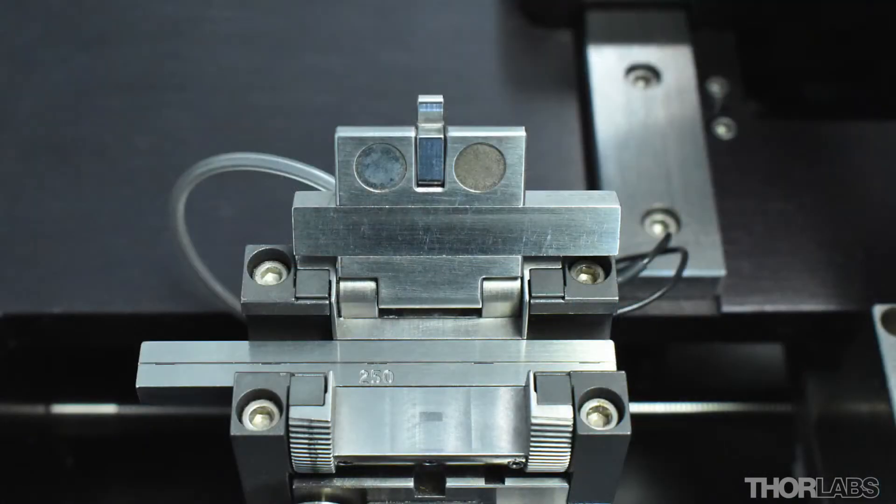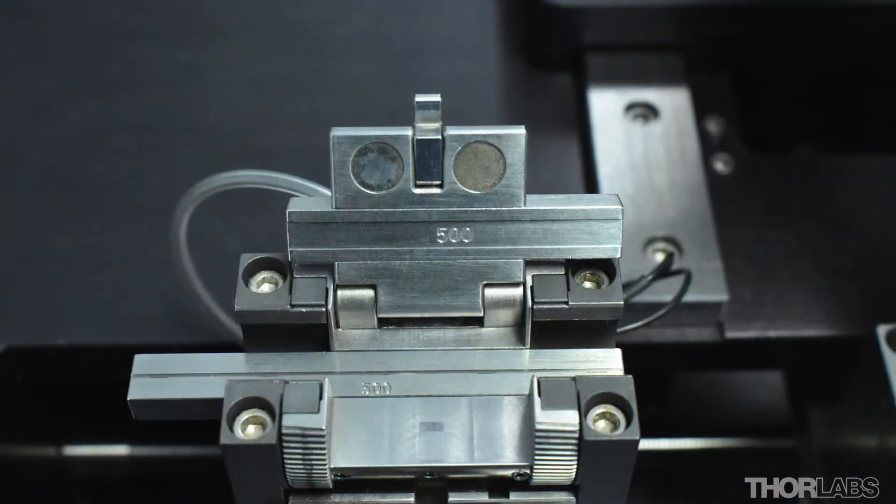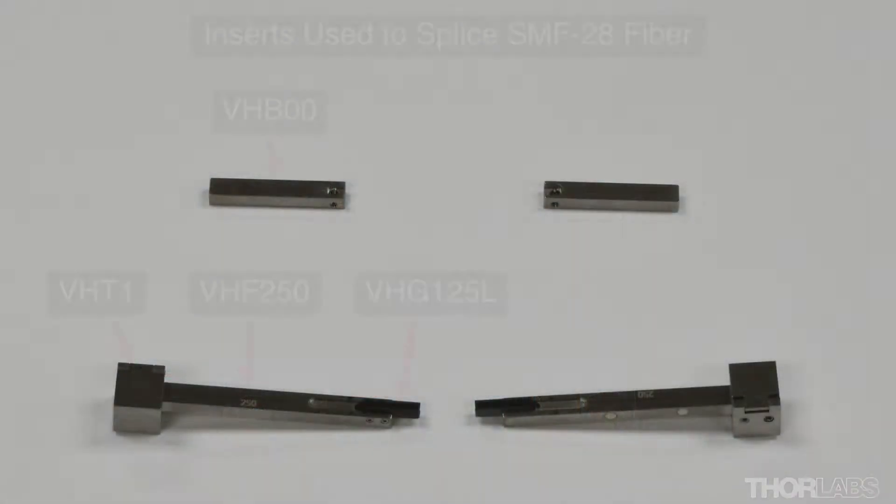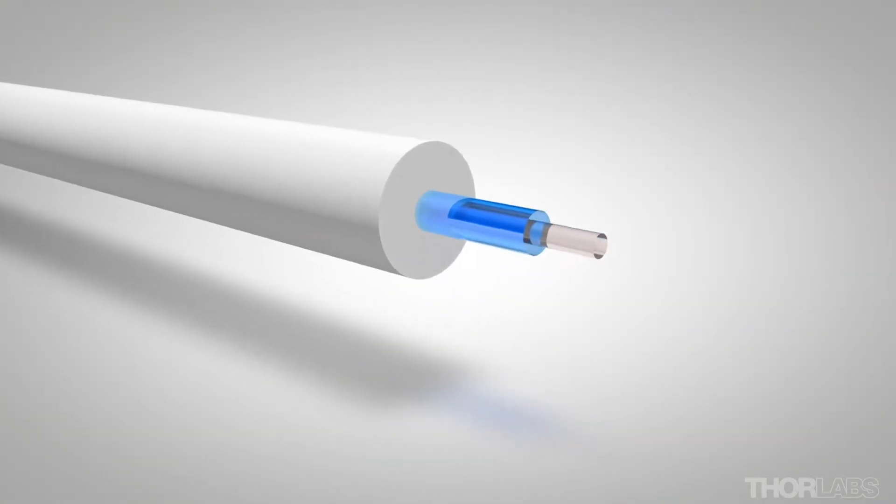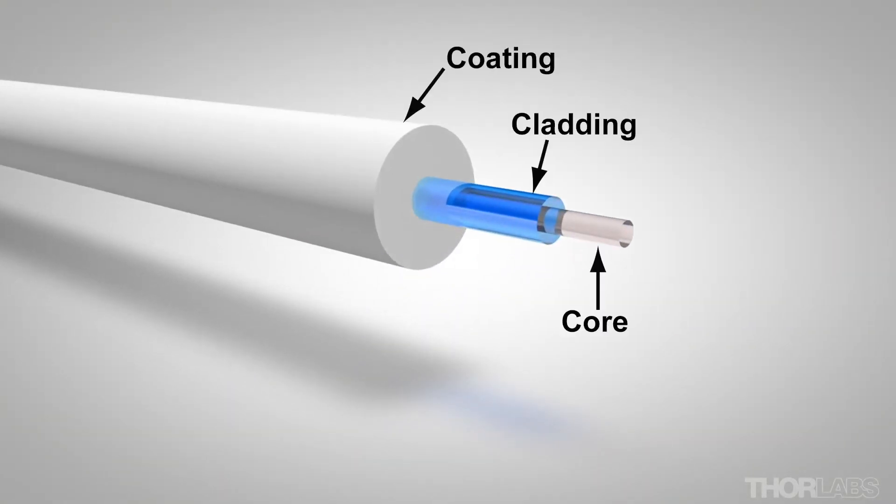Top inserts have either a flat or a flat recess to provide a third point of contact. A large selection of insert sizes are available. Use the selection guide to identify the appropriate pair of inserts for your application. In some cases the inserts will hold the coating and in others the glass cladding.